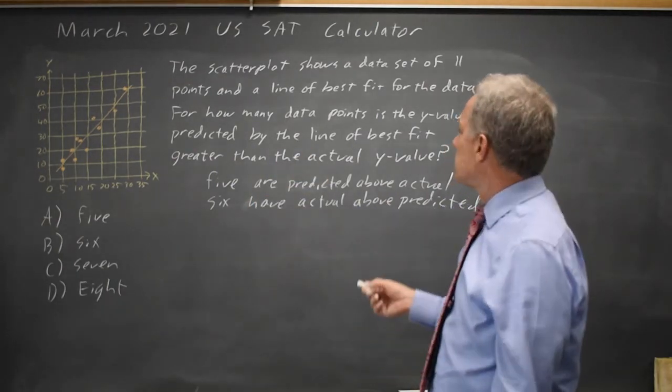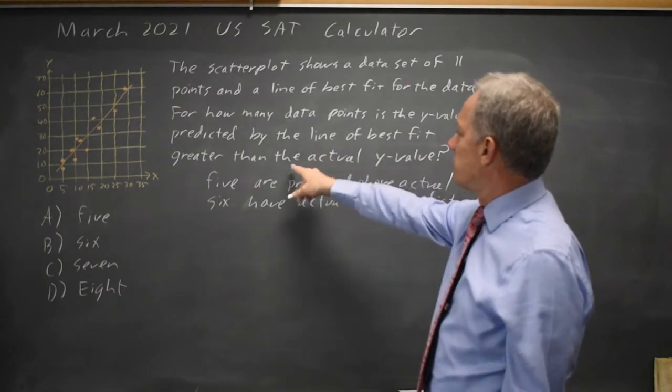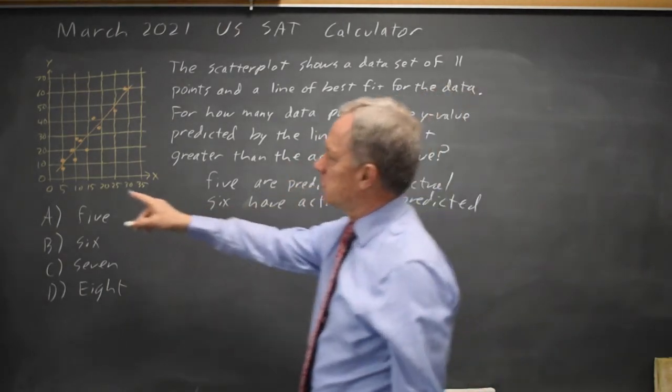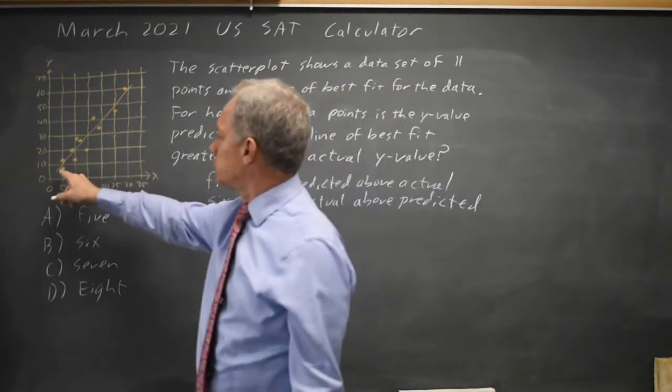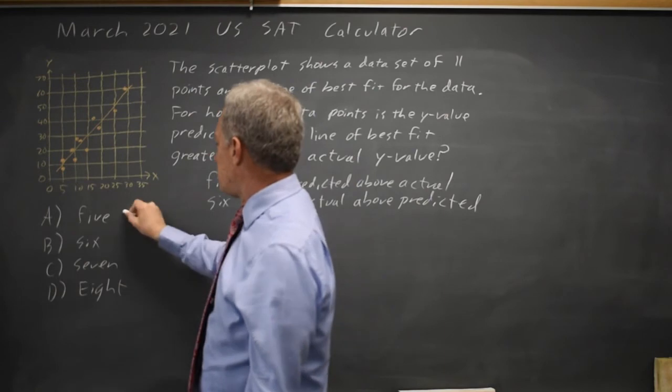So I have 5 plus 6 is 11, I haven't missed any, and they're asking predicted greater than actual, and 5 of them, the predicted, the line of best fit is greater than the actual, which is the scatter plot points. So that would be choice A.